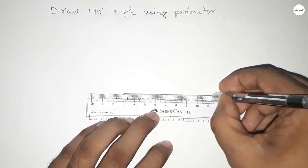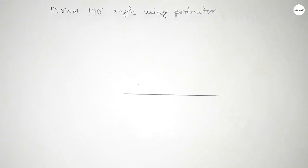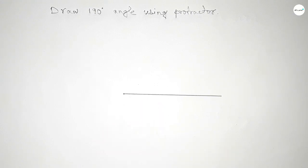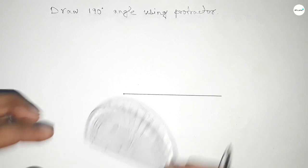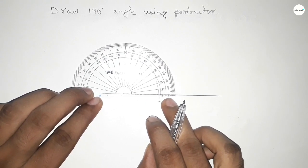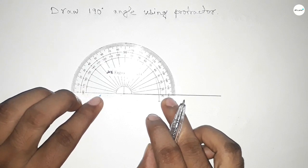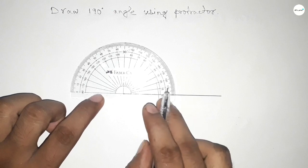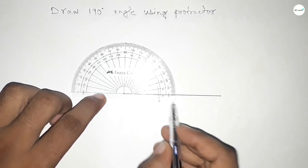Drawing a line here and pointing here to draw 190 degree angle. Now for 180 we put the protractor on the line by this way, but we have to find out 190 degree so we have to add...